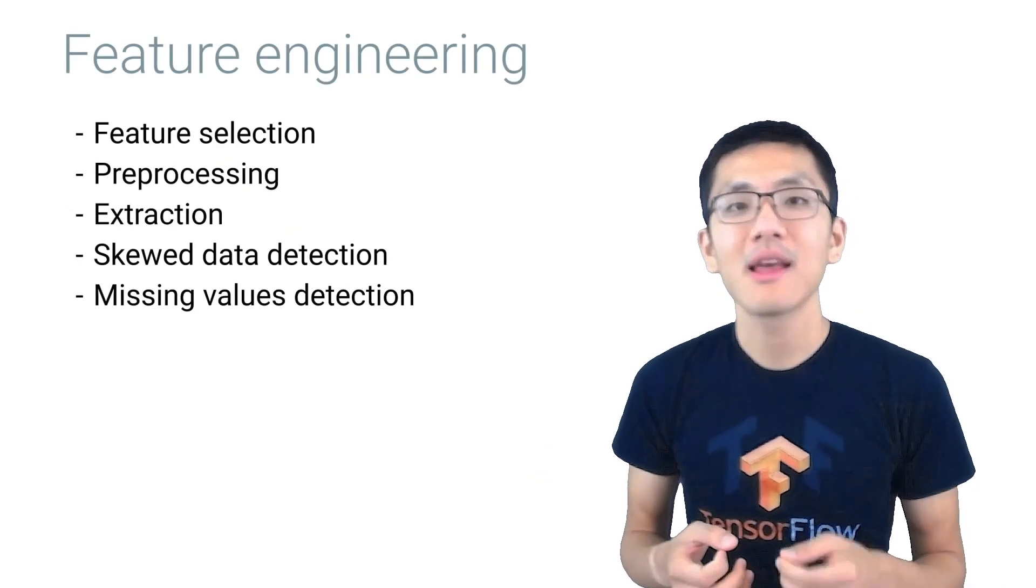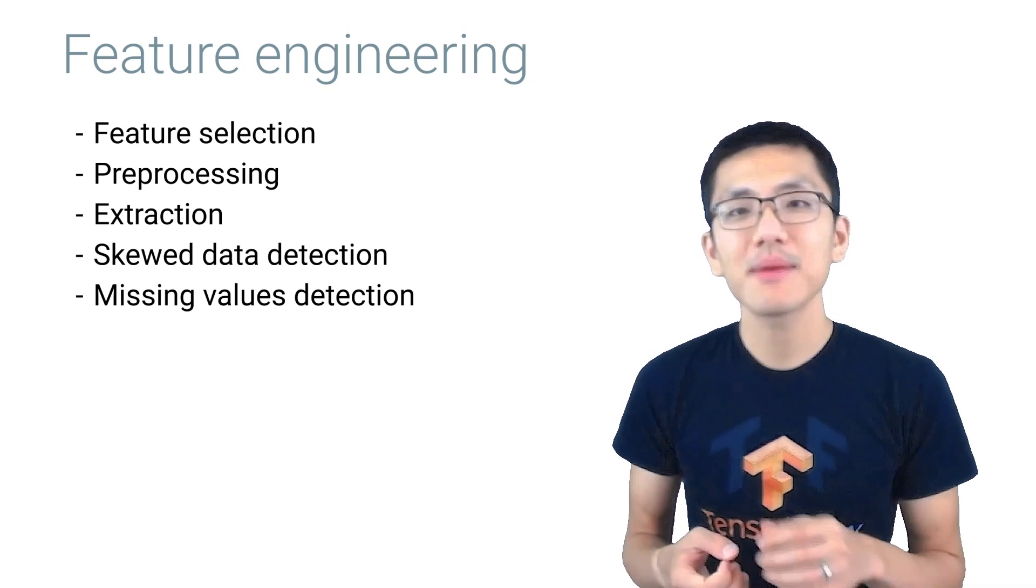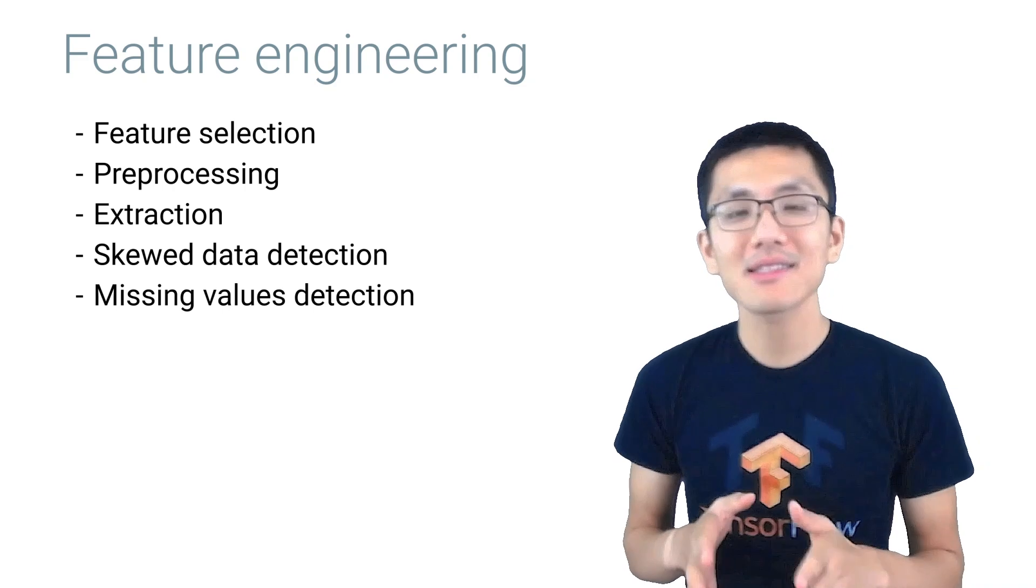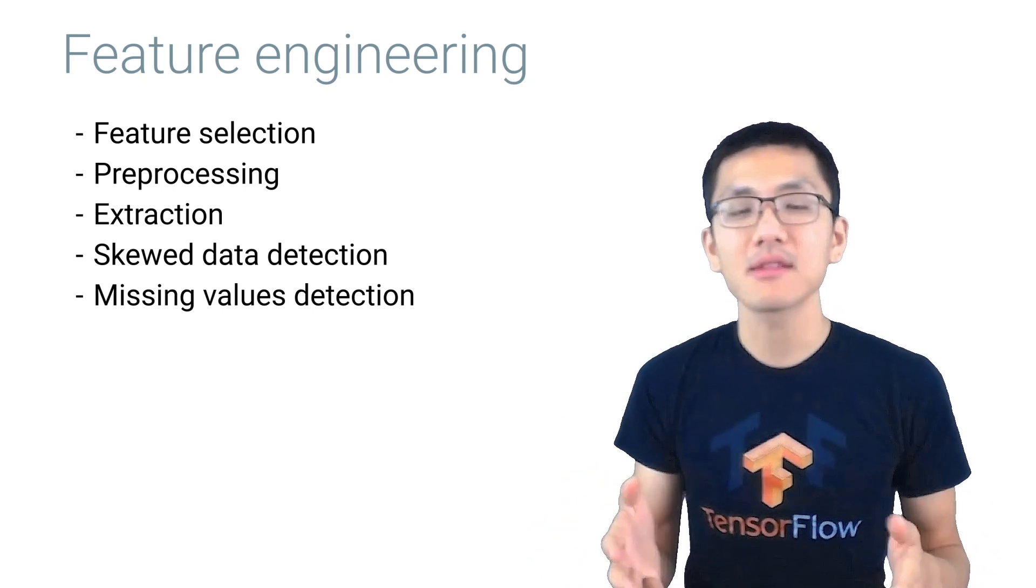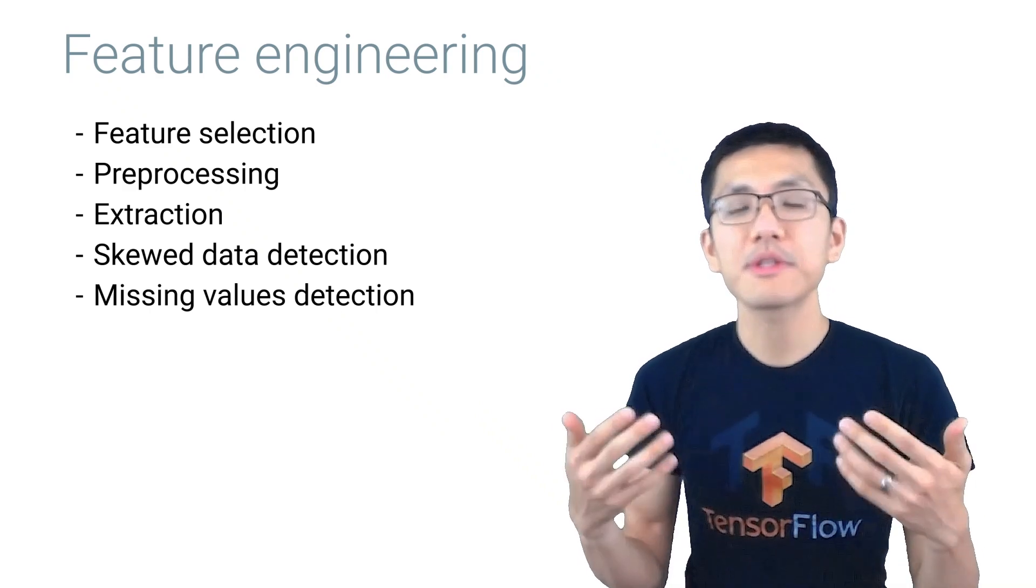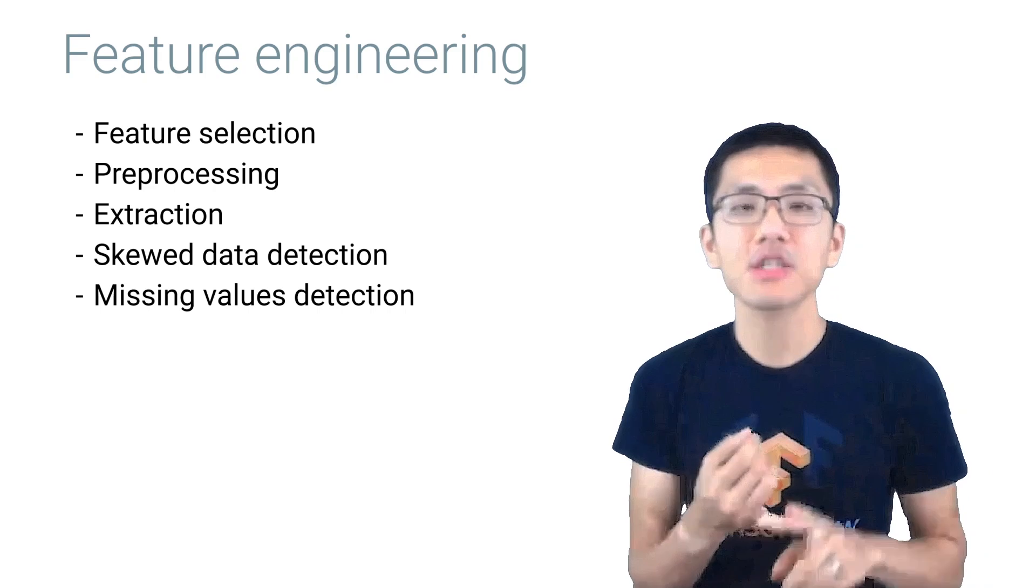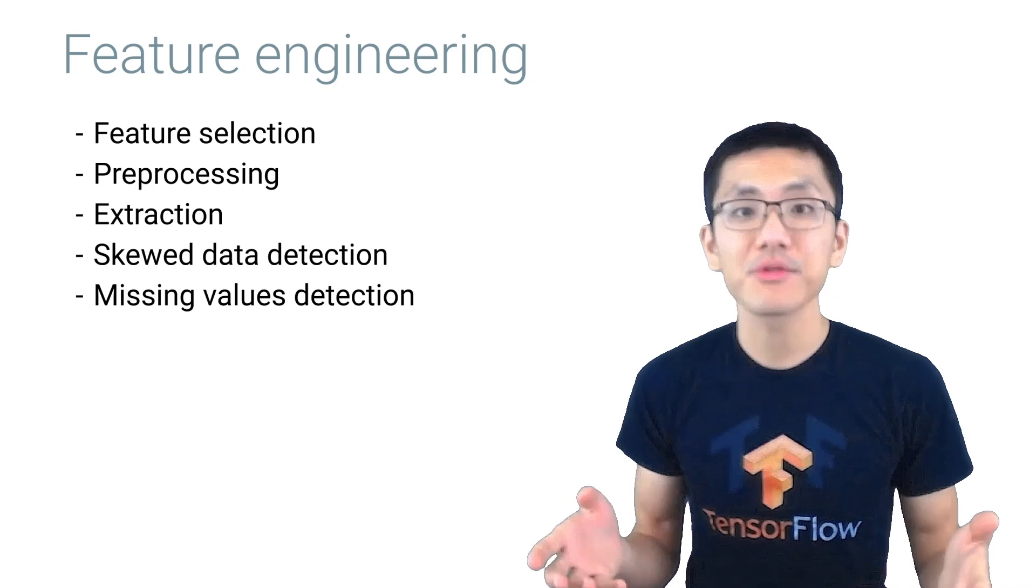Once our data has been loaded in, the next consideration is feature engineering. Feature engineering can be tedious and time consuming, but automating some of this can save data scientists a lot of time, and even sometimes expose blind spots, since the computer will always be totally thorough. Tasks in this step include things like feature selection, preprocessing, and extraction, as well as the detection of skewed data or missing values.